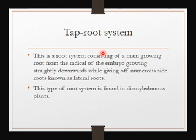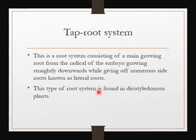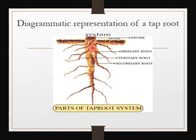The taproot system is a root system consisting of a main growing root from the radicle of the embryo, growing straight downward while giving off numerous side roots known as lateral roots. This type of root system is found mainly in dicotyledonous plants. This main root gives off lateral branches, and a collection of all these with their arrangement is what we call a taproot system.